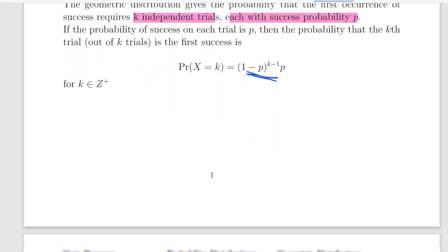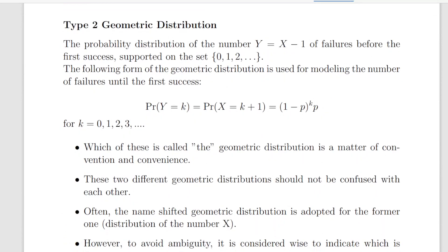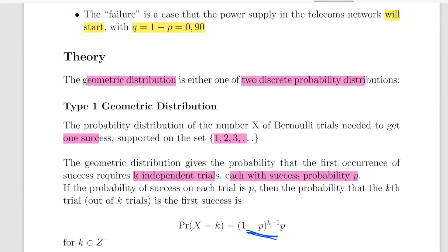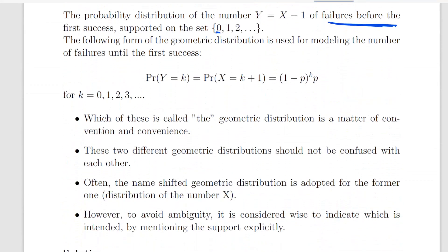Now let's look at Type 2 for clarity. The Type 2 geometric distribution is the distribution of the number y = x − 1 of failures before the first success. That's what we're interested in with Type 2 — the number of failures before the first success. It is supported on the set {0, 1, 2, ...}, so if you get it right the first time, you've had zero failures. That's the key difference — the support starts at 1 for Type 1 and at 0 for Type 2.